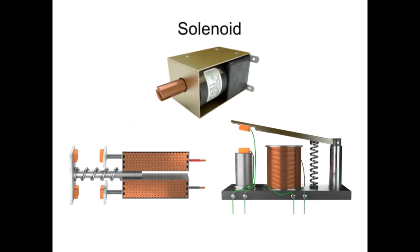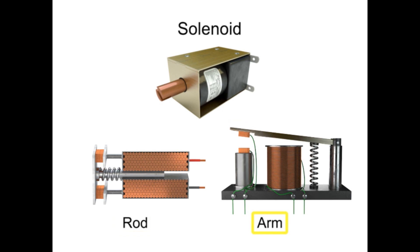At its most basic level, a solenoid is an electromagnetic coil that uses magnetism, produced by the flow of current, to physically move the armature of a solenoid. The armature that is movable can be a rod or a metallic arm.